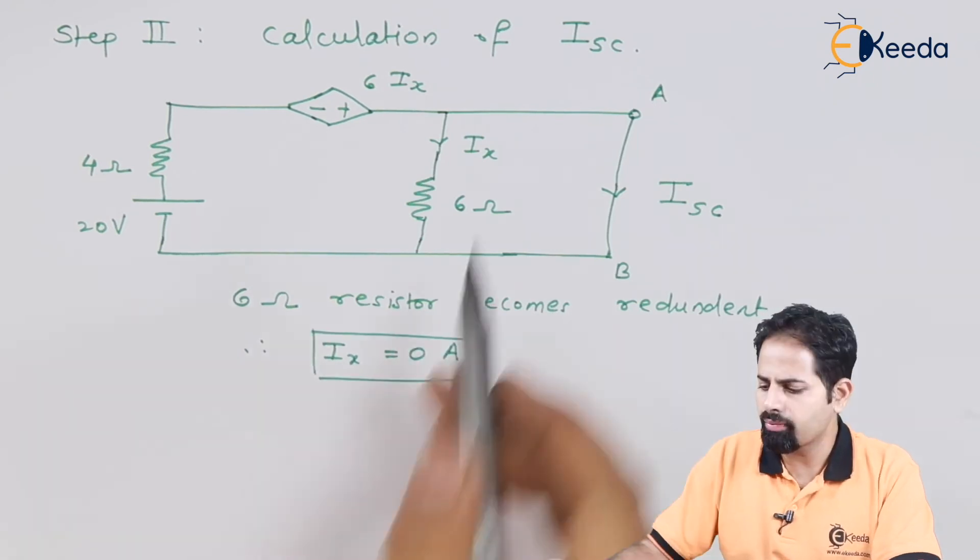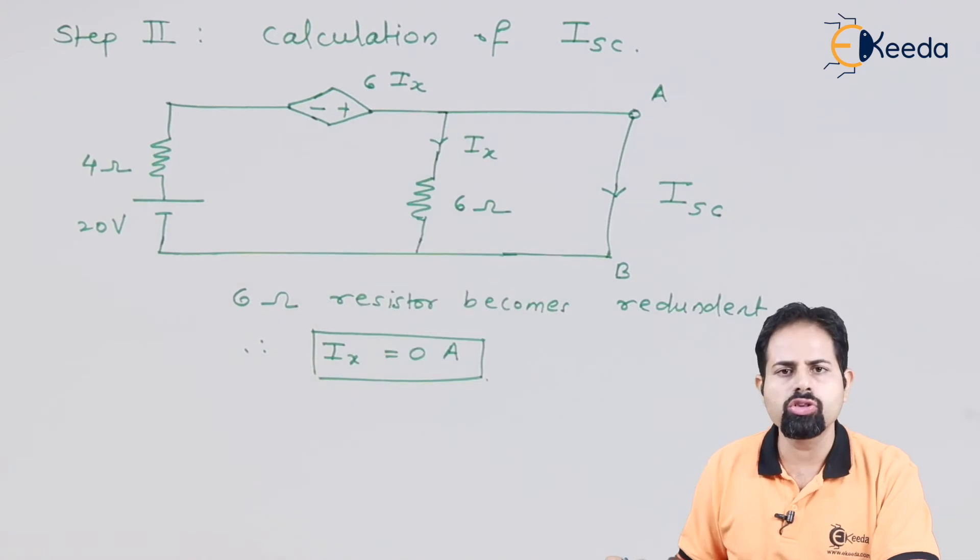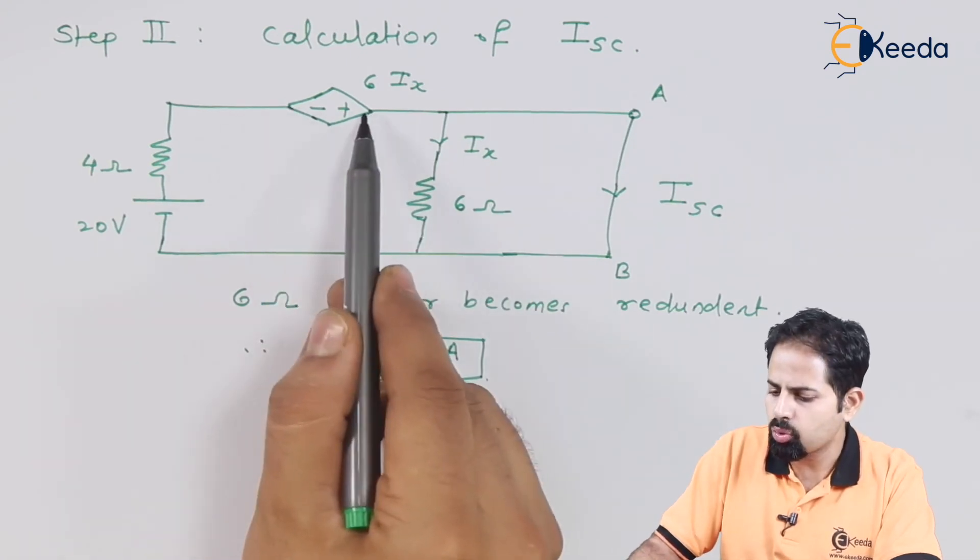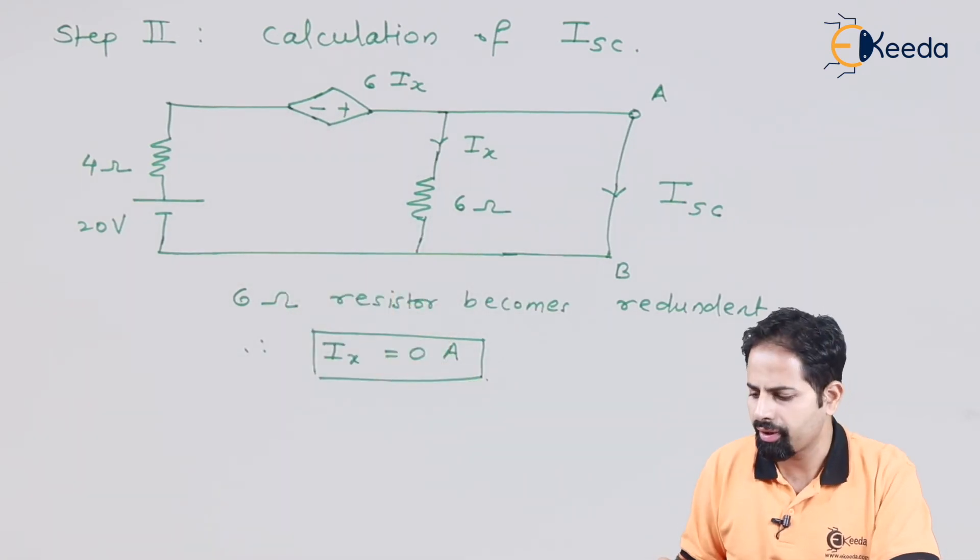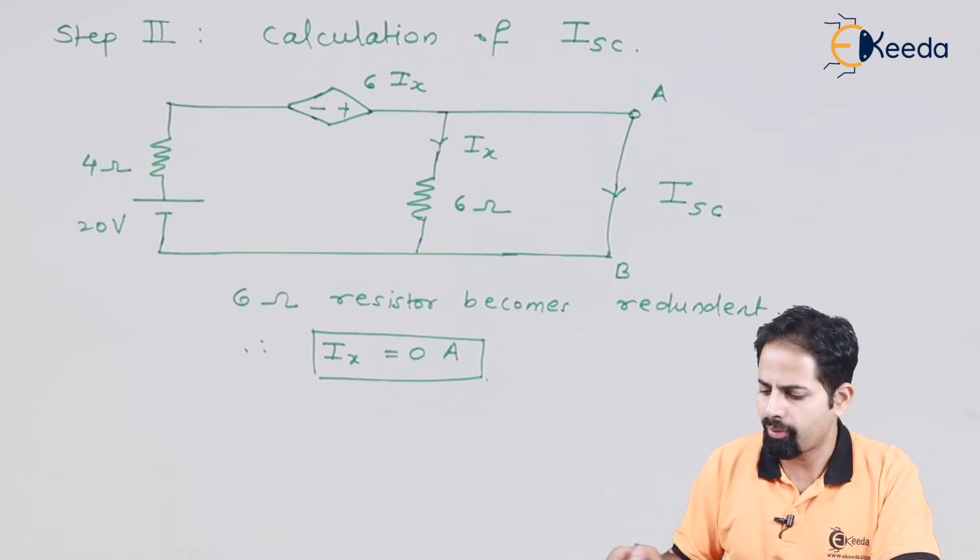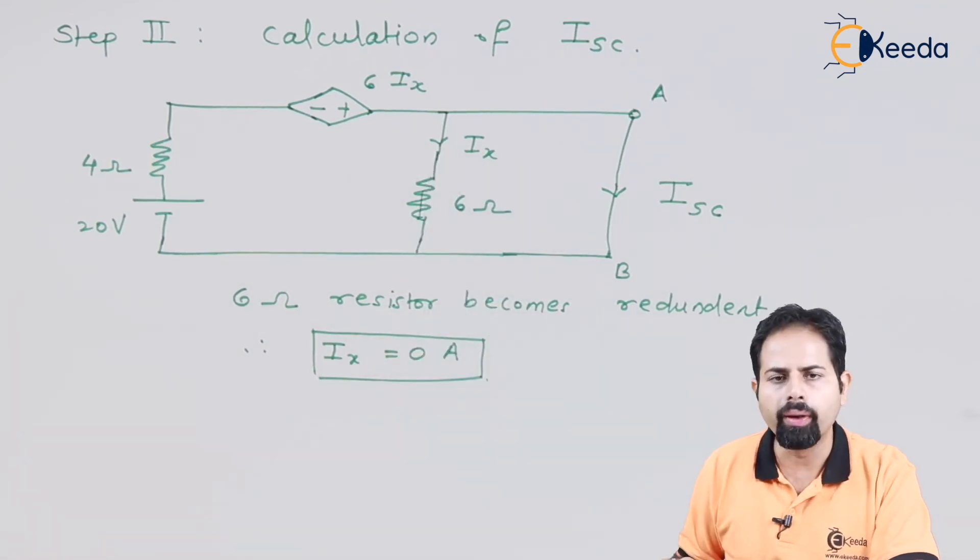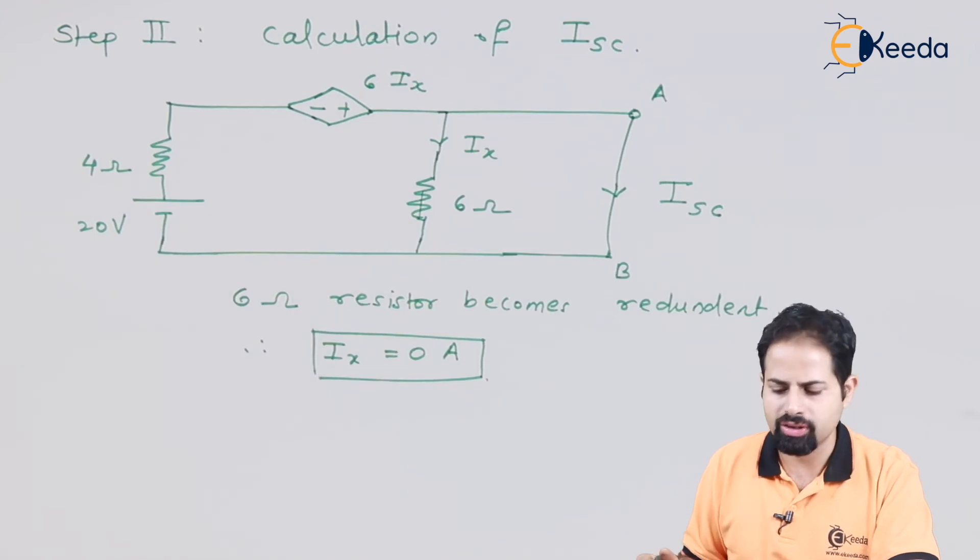And when this Ix becomes 0, this voltage source will also become 0. That means these two terminals can be now short circuited. So we can now redraw this diagram with this branch as open and this branch as short circuit.